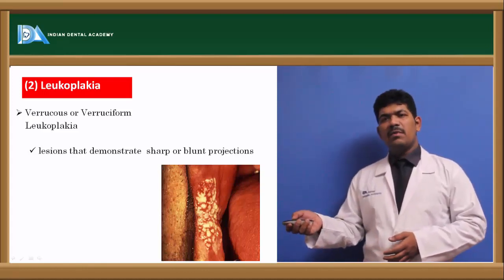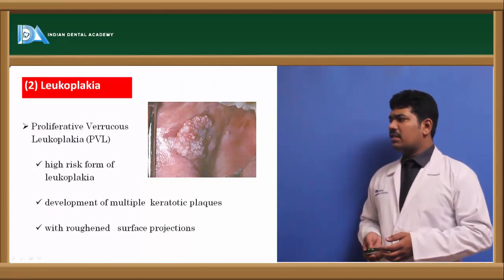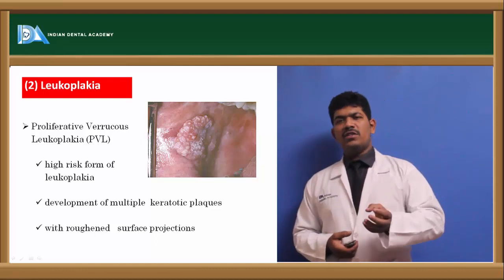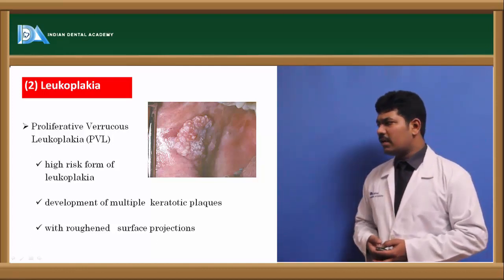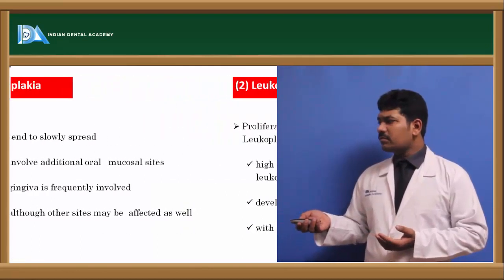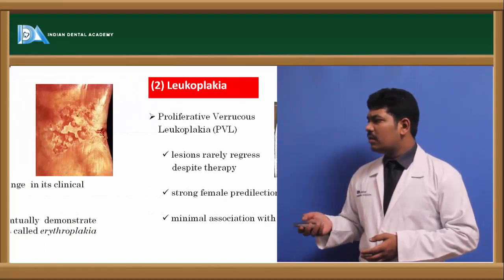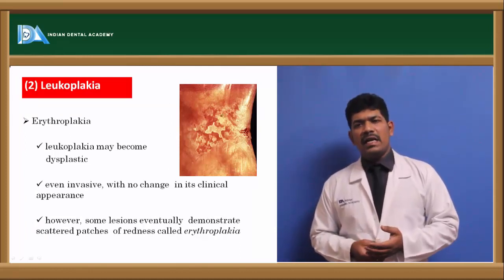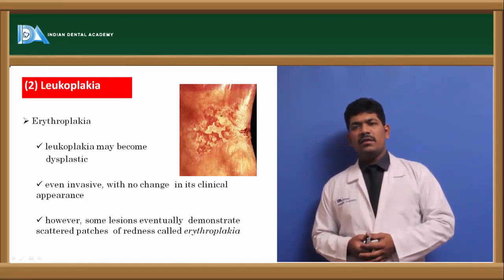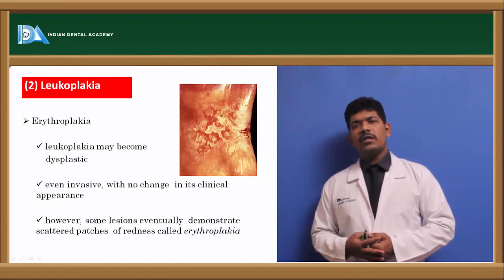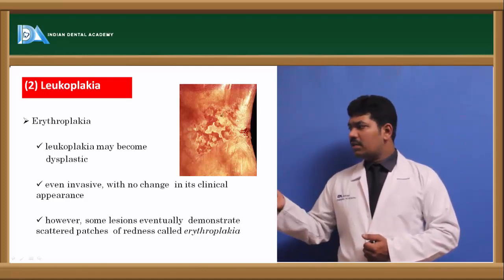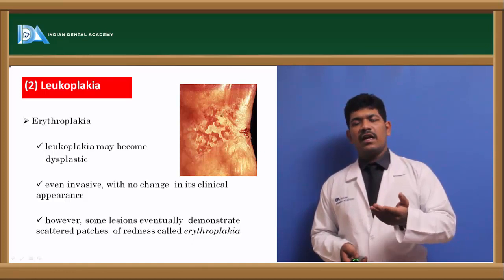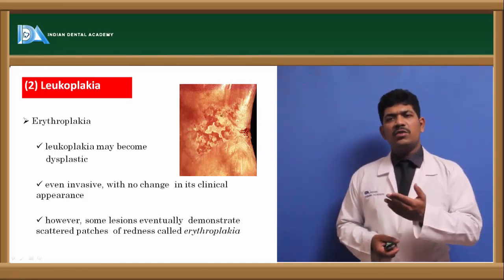The varicose type of leukoplakia can be clearly demarcated from other types, with sharp and blunt projections visible. The same kind of lesion, when even more severe with more nodular and proliferative areas, becomes a proliferative varicose leukoplakia — very rough in nature and also a high-risk type. The last type is erythroleukoplakia — the proliferations break down revealing reddish areas beneath. This has the highest probability of dysplastic change or malignant transformation. The lesion itself is not invasive, but if it becomes invasive it must be associated with malignant change.